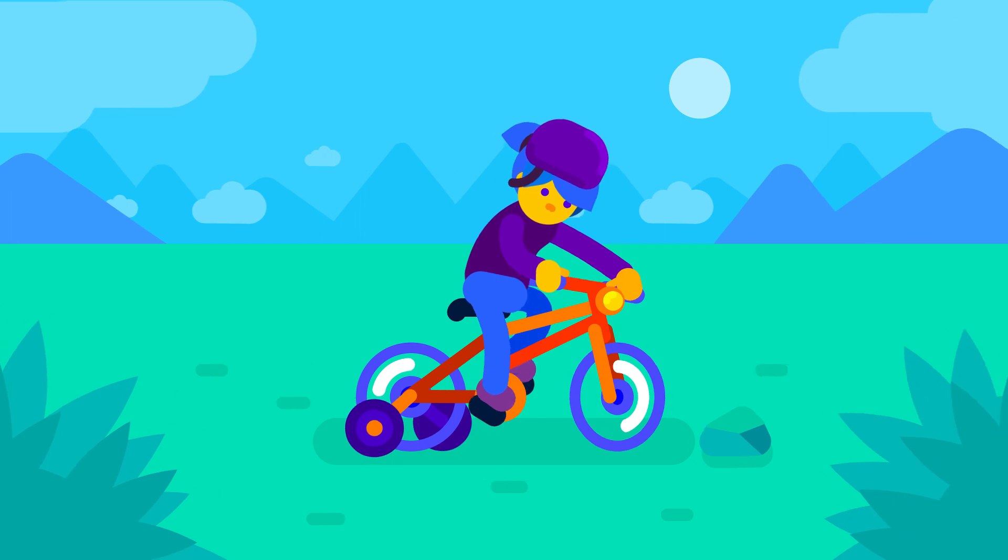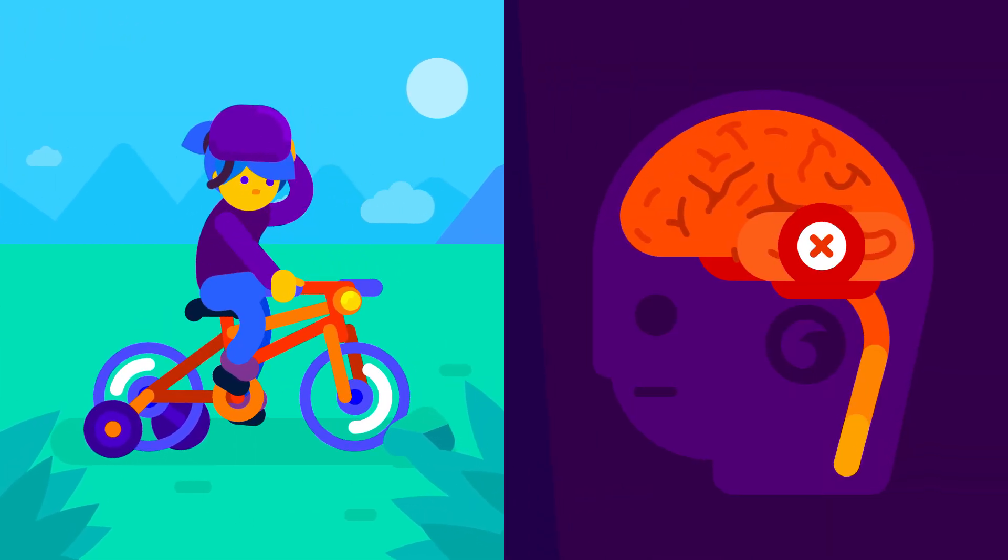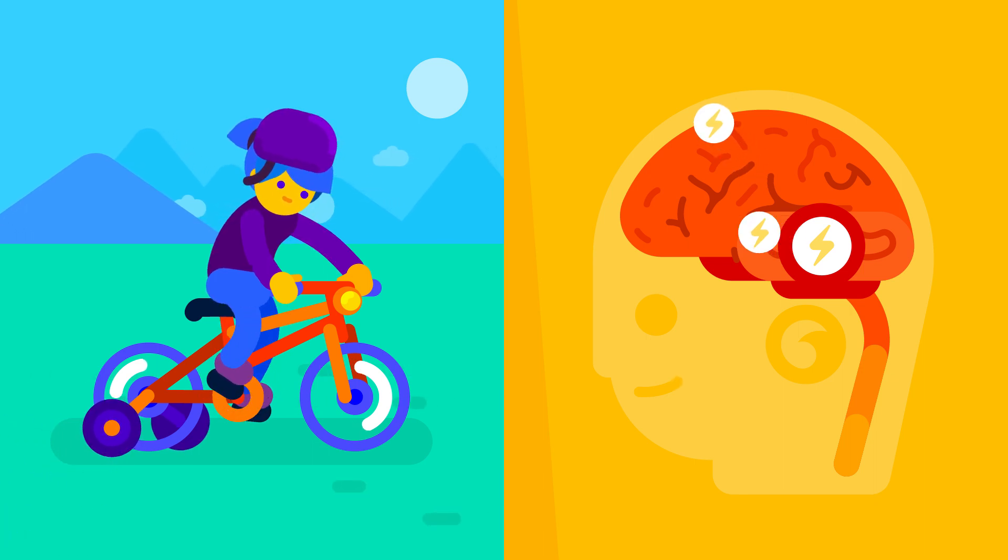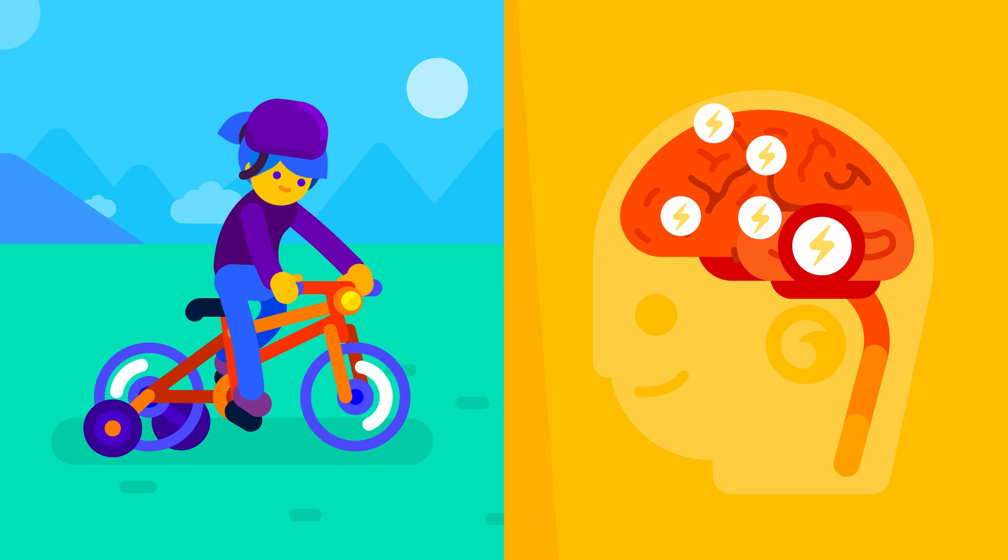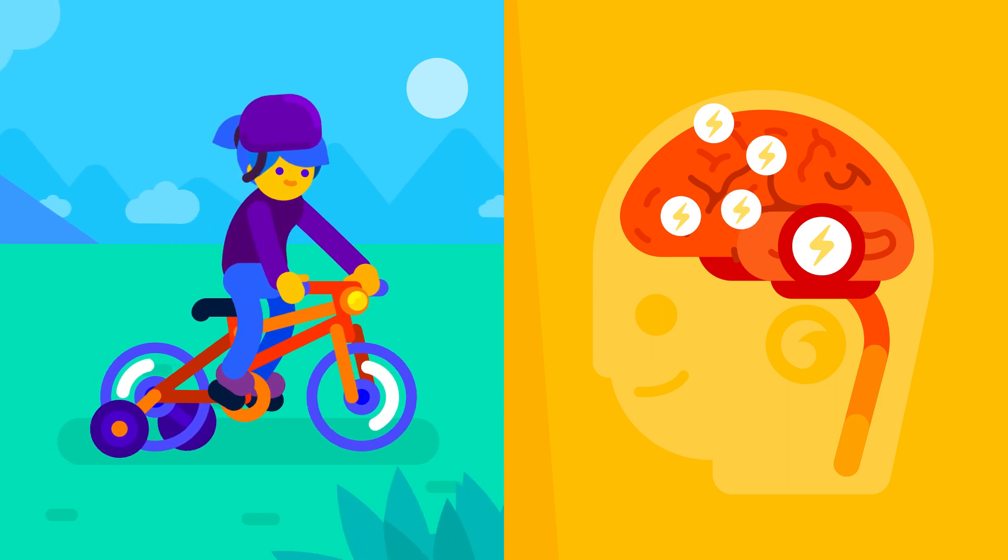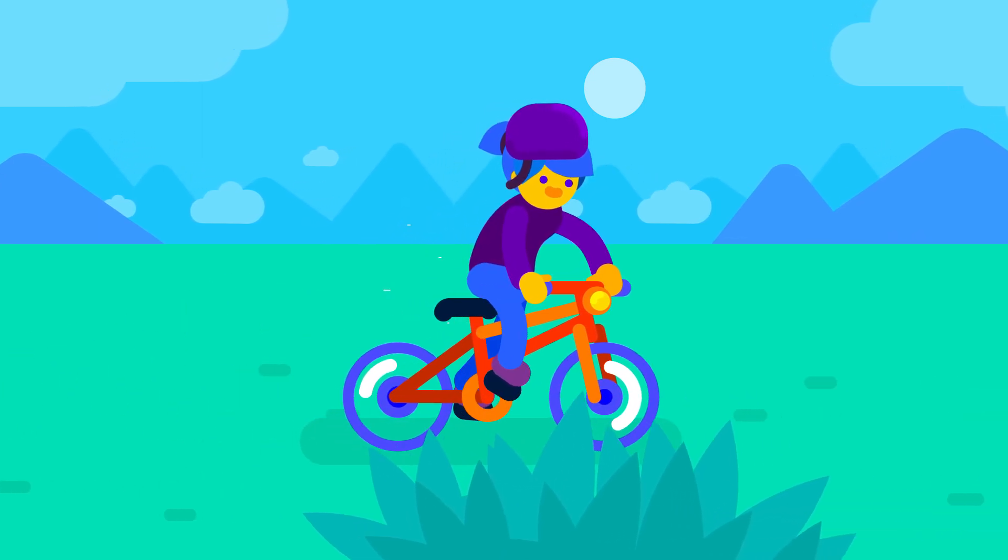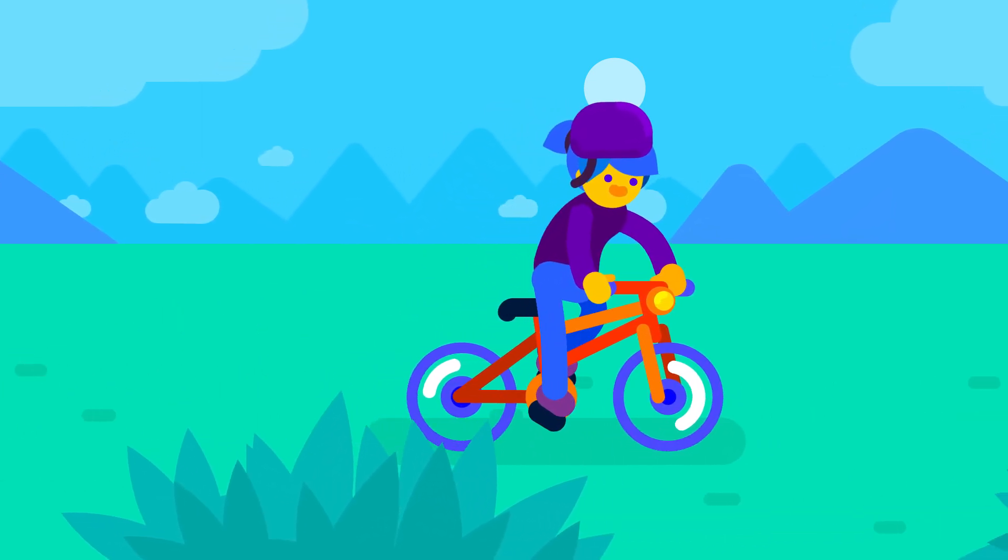Think of a child who wants to learn to ride a bike, trying time and time again. Each success in this process releases dopamine in the brain. This brain chemical plays a crucial role in reward and motivational behavior in humans. Thus, success encourages further effort until the child is able to stay on the bike.